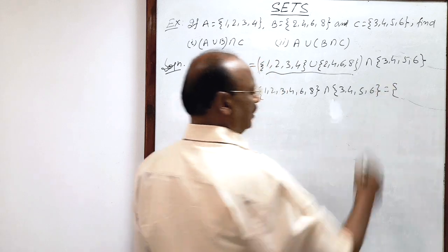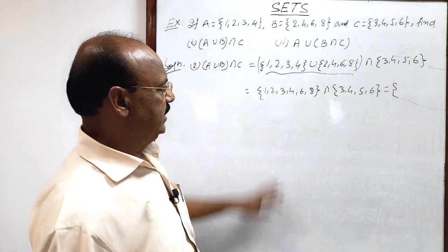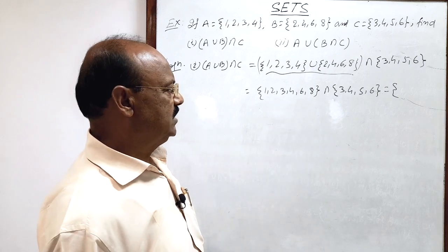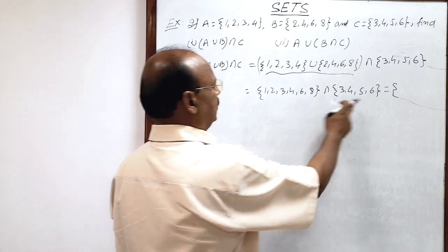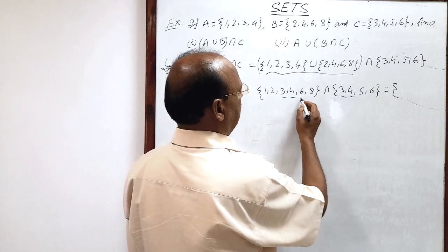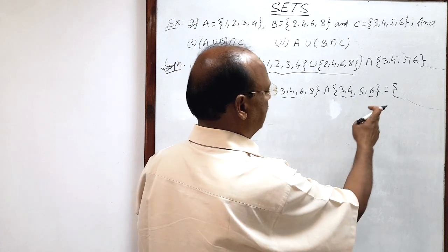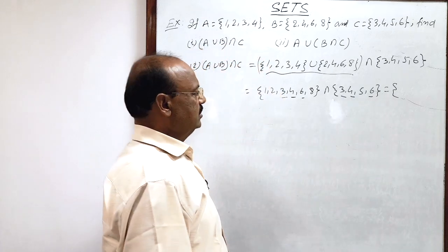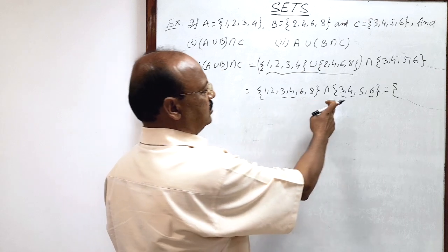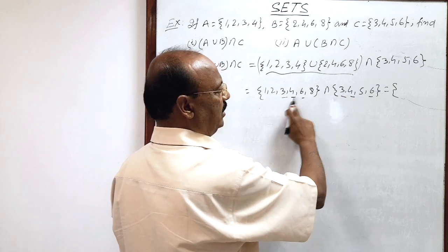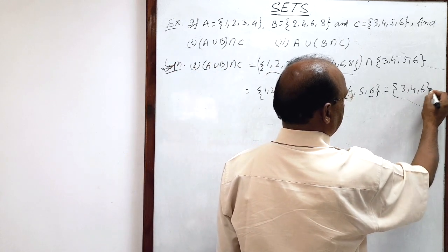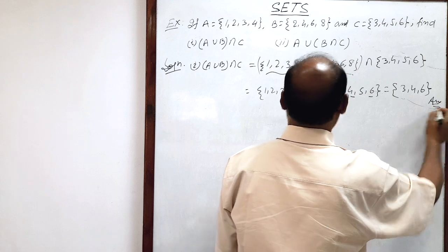So this equals how much? In intersection of two sets, we collect only common elements. You see which elements are common in both sets: 3 is common, 4 is common, and 6 is common. So the result set consists of elements {3, 4, 6}. This is the answer for the first question.